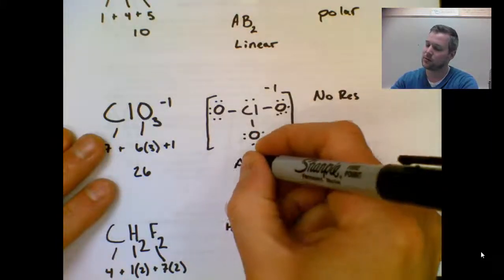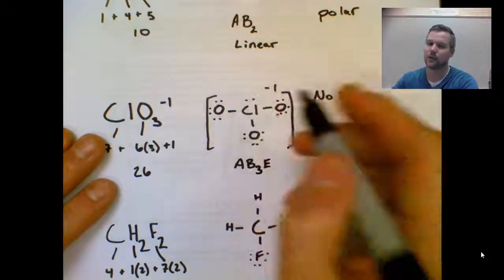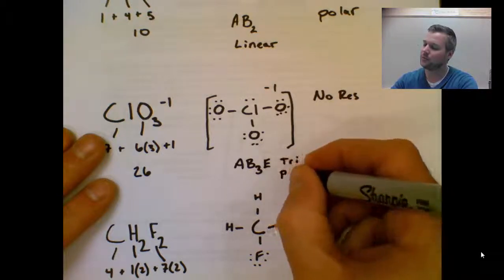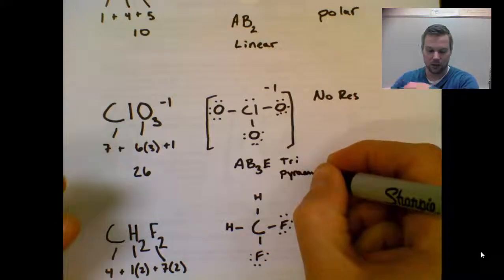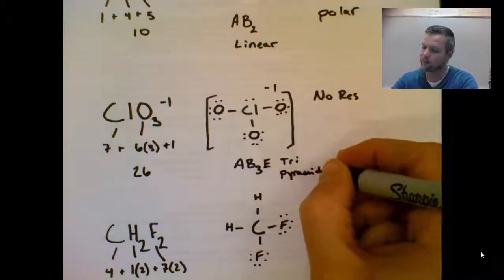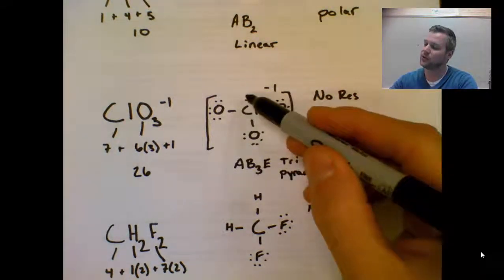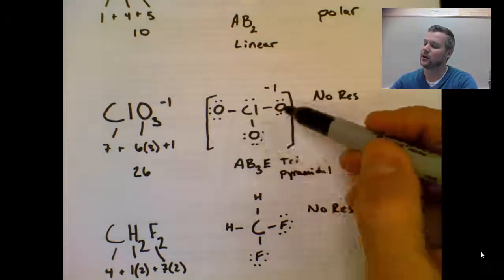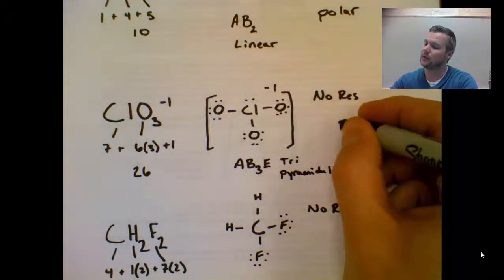AB3. Three single bonds. One lone pair on the top of chlorine, which makes this trigonal pyramidal. And then, since chlorine has a lone pair of electrons on it, this is likely going to be polar. Even though oxygen is the other atom, these vectors will add together, making this a polar molecule.